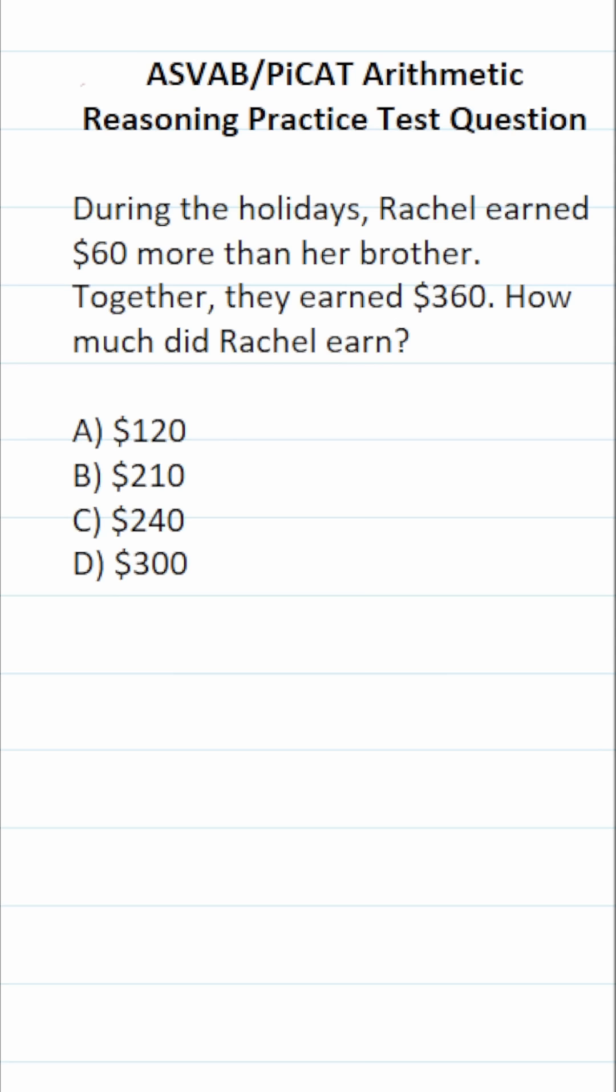We're going to have to take these statements and translate them into an equation that we can then solve. We know that both of them earned $360 together. That said, we don't know how much Rachel or her brother earned individually. So I'm going to say her brother earned X amount of dollars, and I'm going to make this very clear. This is how much her brother earned.